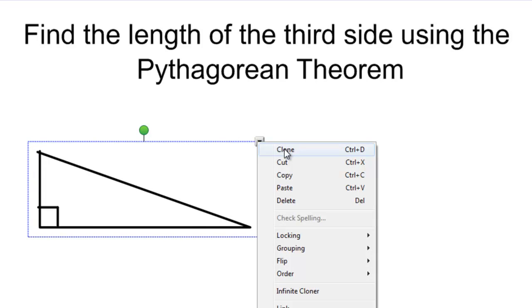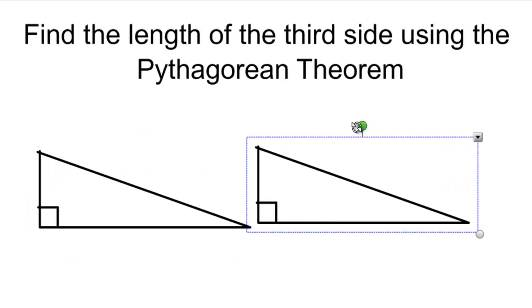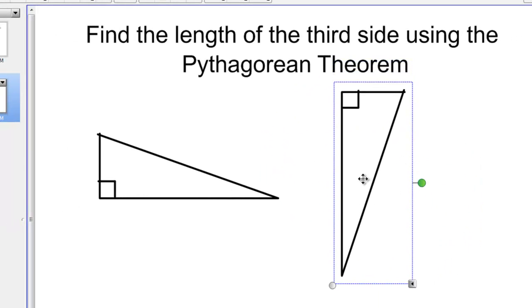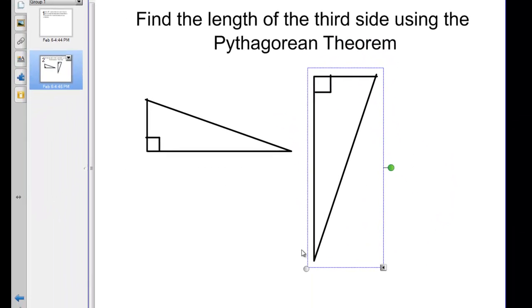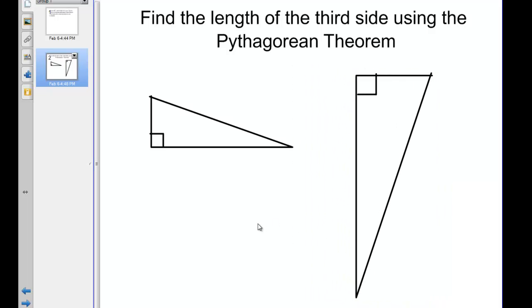Let's clone that with the clone tool. Let's spin it and make this one larger. So now I have a different looking triangle that I'll be asking students to find the third side on.